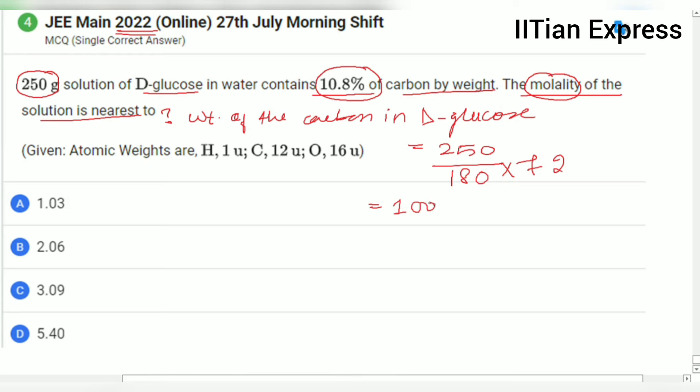It is given that 10.8% of carbon by weight is there in water. So weight of the solution is weight of the solution is equals to 925.93.